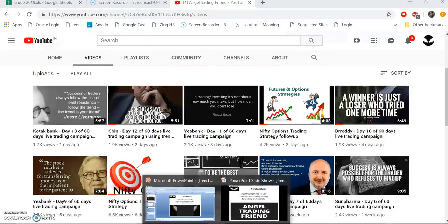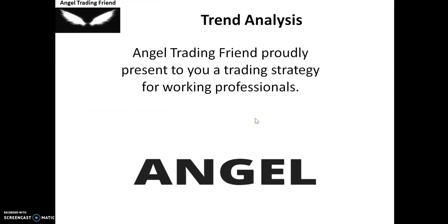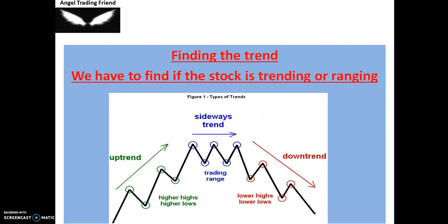Finding the trend is the most critical task. There are three possibilities: an uptrend with higher highs, a sideways movement when the market is ranging, and a downtrend when the market is coming down. For all three situations we need a different kind of tactic — we can't use the same methodology for all kinds of market movements. This is where your expertise and experience come into picture.